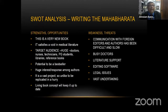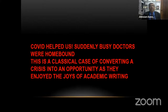Then we did a SWOT analysis because we were told by our publisher, 'You're trying to write the Mahabharata.' The strengths and opportunities were that it was a very new book, it satisfied a void in medical literature, the target audience was huge — doctors, nurses, technicians, PhD students, libraries, reference books — and it has the potential to be a bestseller like the AO Manual. The weaknesses were communication with several foreign authors, literature support, editing software issues, and legal issues. But something that really helped us was COVID, because COVID suddenly made busy doctors less busy and homebound.